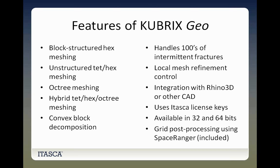Qubricks Geo allows for local mesh refinement and is integrated within Rhino 3D as an icon that can be launched from within Rhino. It uses the Itasca license key and is available in 32 and 64 bits. Qubricks Geo version 12 also includes a grid post-processing tool called Space Ranger, which allows you to assign various groups based on complex surfaces — for example, all zones above a certain surface or intersecting it within a certain distance. It also allows you to modify an existing model to include a more detailed model within it.